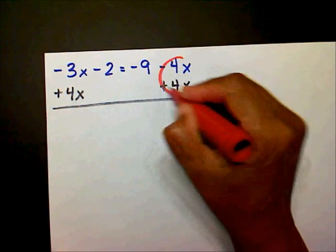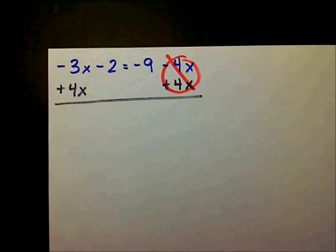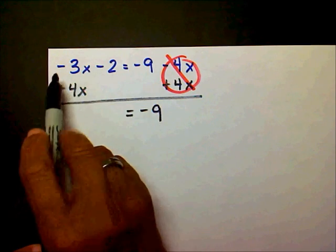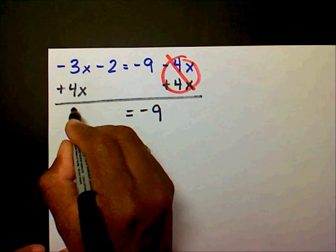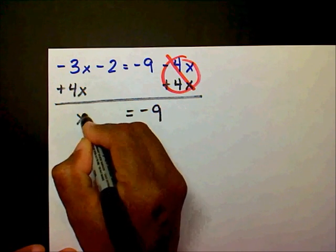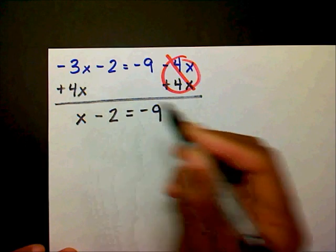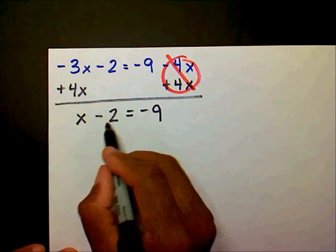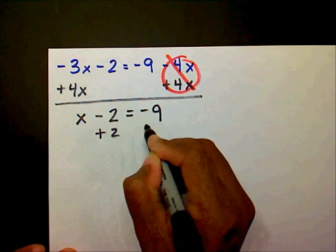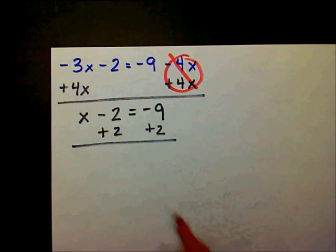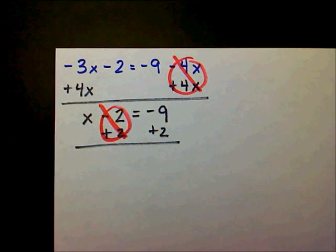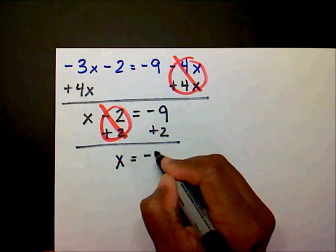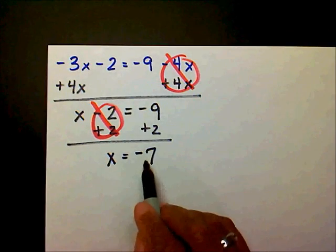This is going to create a zero term. On my right-hand side I'm left with negative 9. On my left-hand side, negative 3x plus 4x is just 1x — or just x — minus 2. We now have a one-step equation, so I need to isolate x by adding 2 to both sides. That creates another zero pair, giving x equals negative 9 plus 2, which is negative 7.